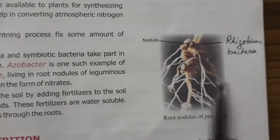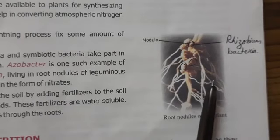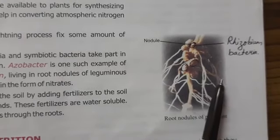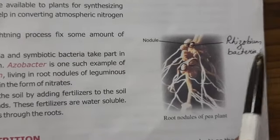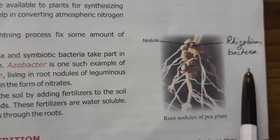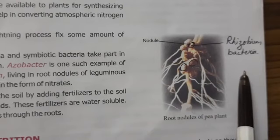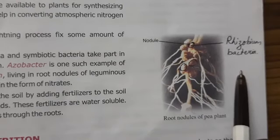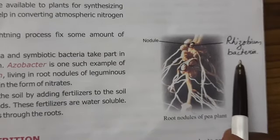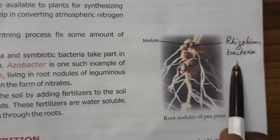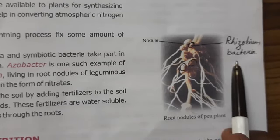How do they help each other? The rhizobium bacteria converts atmospheric nitrogen into a simple form.